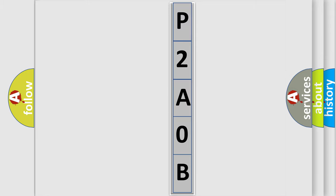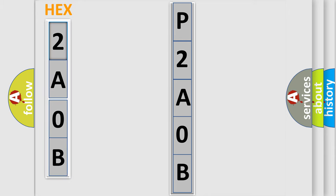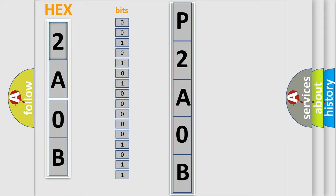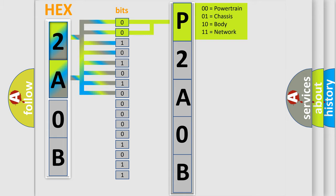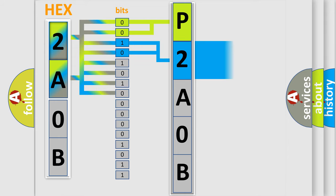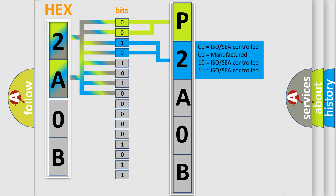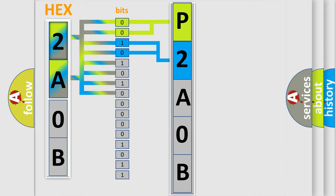The error code is split into two bytes consisting of 16 bits. One bit is the basic unit that each computer works with. The bit has two logical states: zero, low level, and one, high level. By combining the first two bits, the basic character of the error code is expressed. The next two bits determine the second character. The last bits of the first byte define the third character of the code.